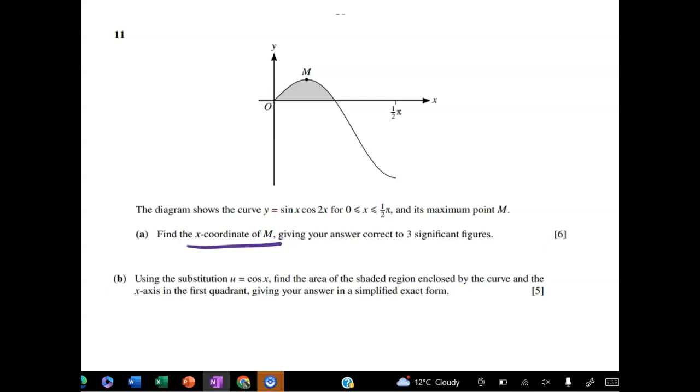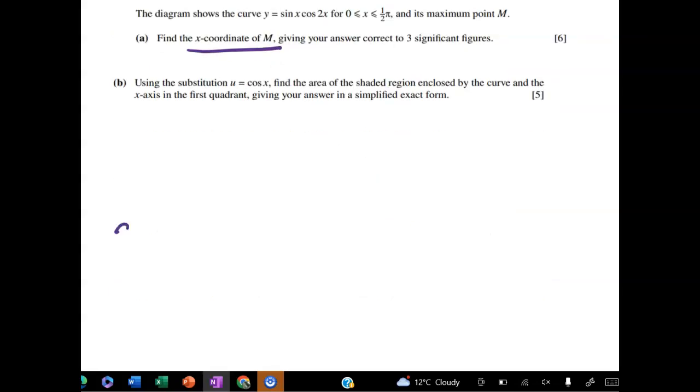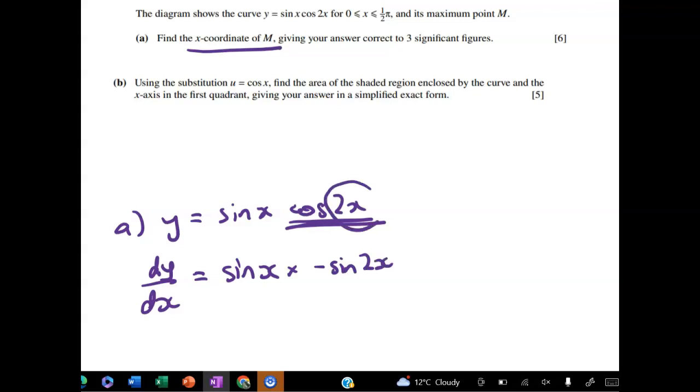Right, so we've got y equals sin x times cos of 2x. So we're going to need to use the product rule. The first thing that I'm going to do is differentiate with respect to x and then set that equal to zero. So it's going to be sin of x times the derivative of this function, which is going to be, I'll go really slowly, so it's going to be negative sin 2x. But now I need the derivative of the inside function, which is 2.